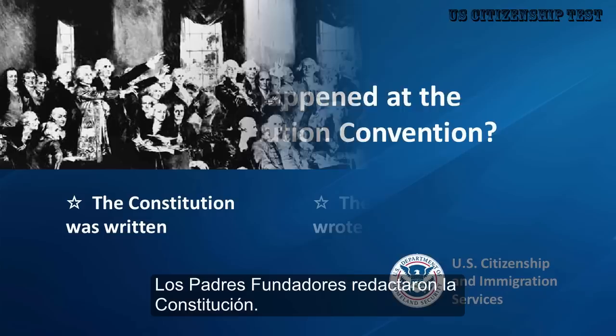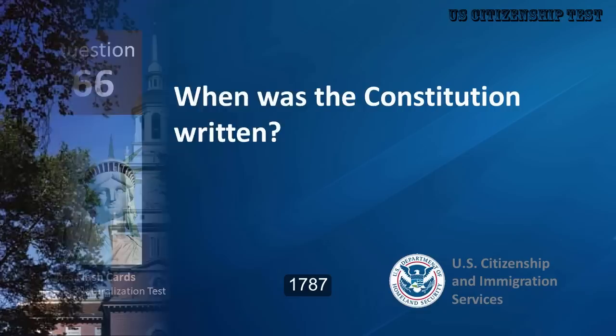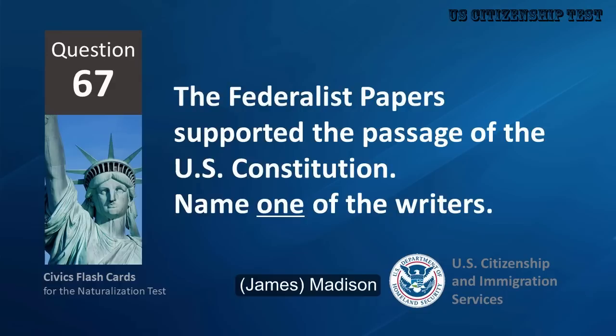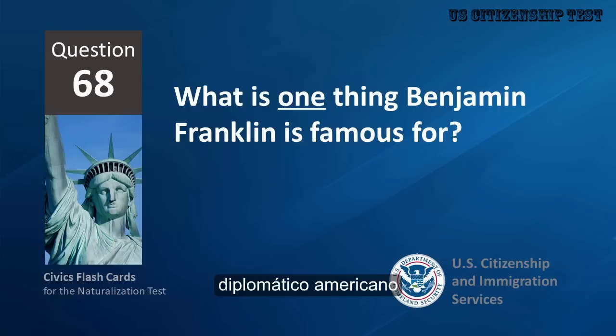What happened at the Constitutional Convention? The Constitution was written, the Founding Fathers wrote the Constitution. When was the Constitution written? 1787. The Federalist Papers supported the passage of the U.S. Constitution. Name one of the writers. James Madison, Alexander Hamilton, John Jay, Publius.